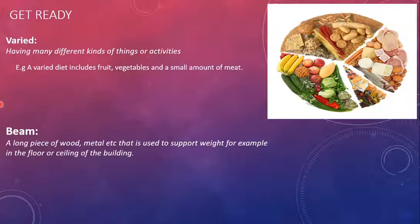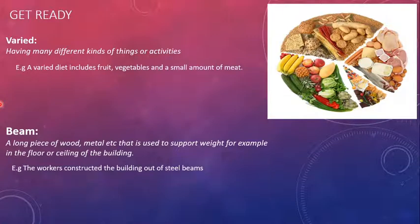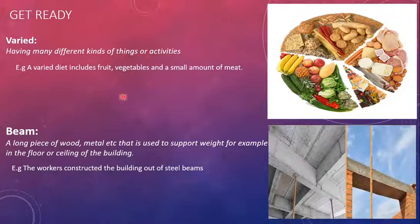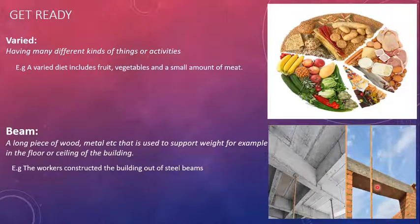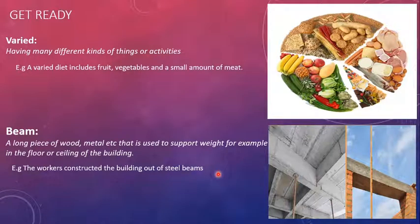The next word is 'beam.' Beam means a long piece of wood, metal, etc. that is used to support weight, for example in the floor or ceiling of a building. Sample sentence: the workers constructed the building out of steel beams. As you can see in the picture, these horizontal concrete pieces are called beams, which support the roof and the window. A beam can be of wood, metal, or concrete.